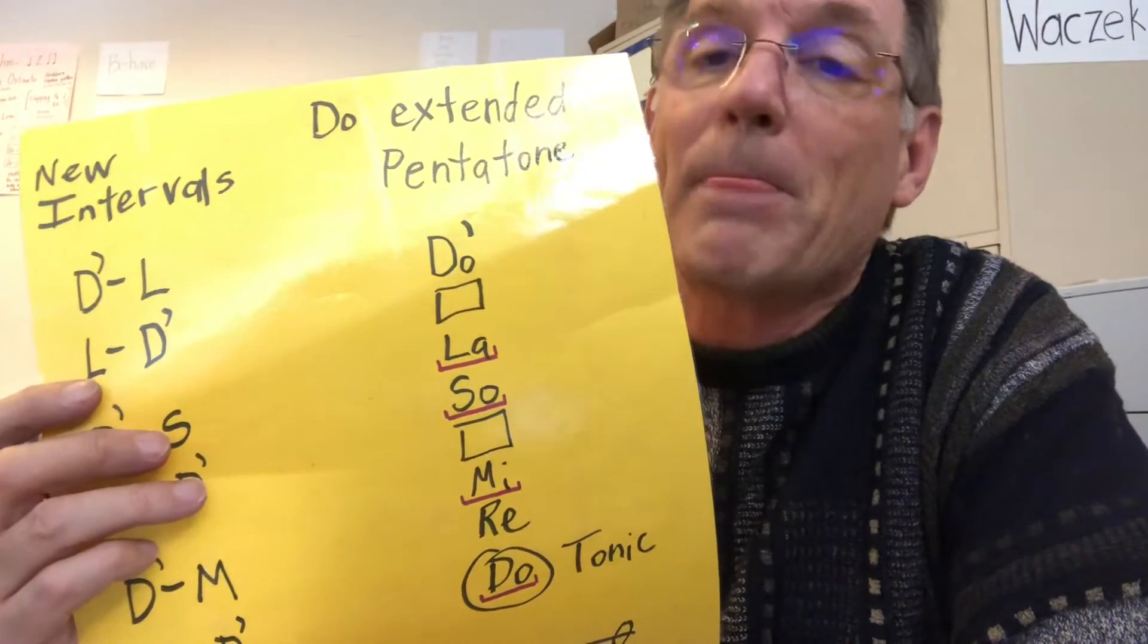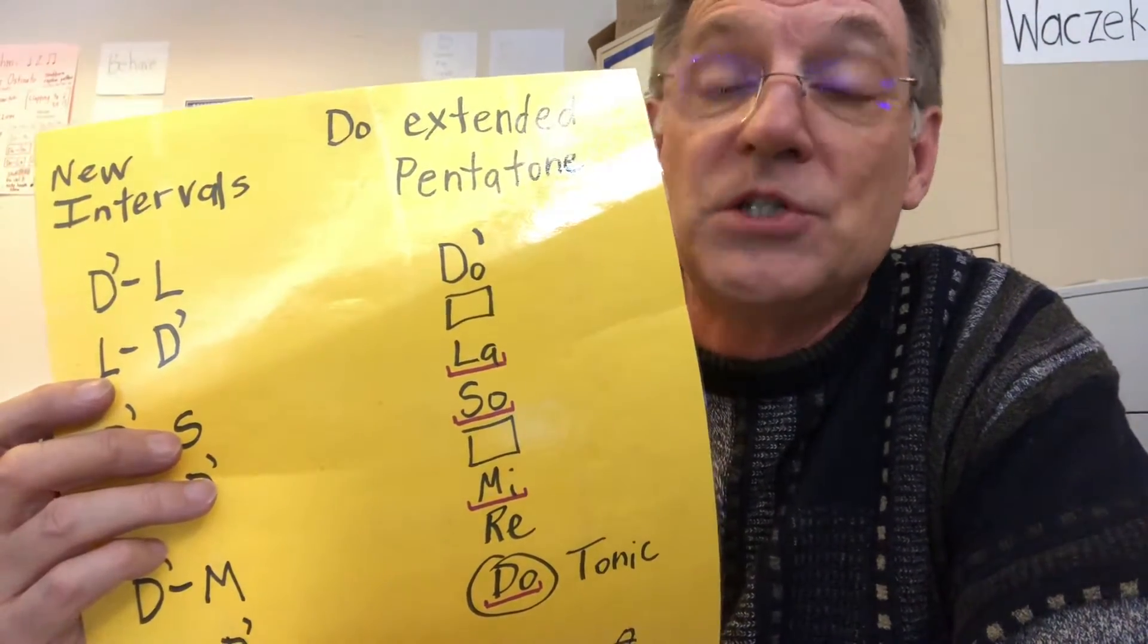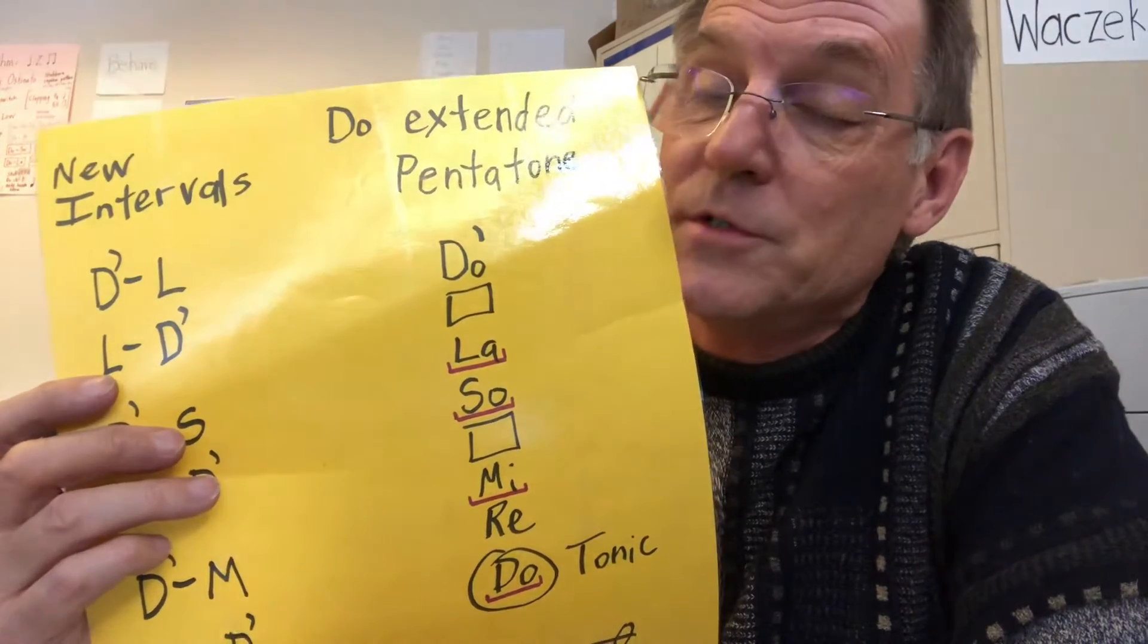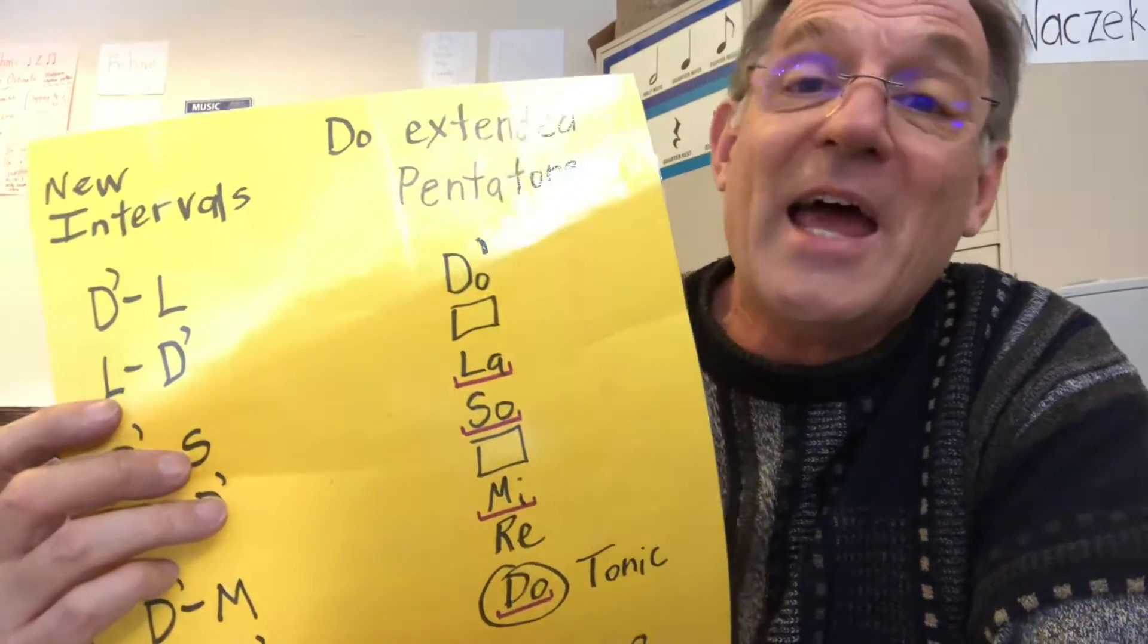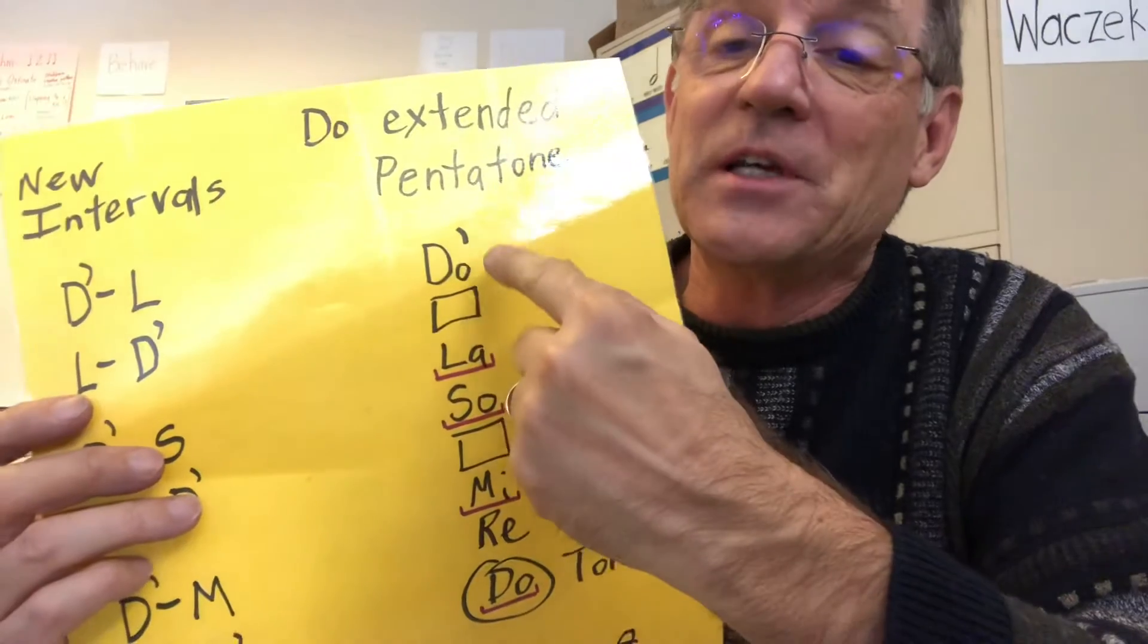Happy Winter, bells are ringing. Happy Winter, children singing. Happy Winter, Happy Winter, one and all. Here I go, I'll sing it. It starts with high Do.